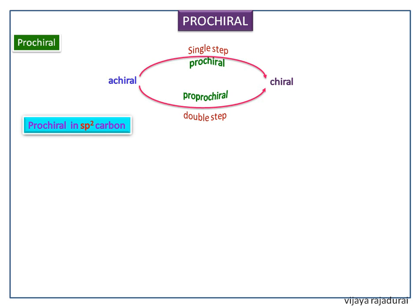Now we see prochiral in sp2 carbon. A trigonal planar sp2 hybridized atom can be converted to a chiral center when a nucleophile is added to the re-face or si-face of the molecule. To explain this, we consider the reduction of acetophenone reaction.